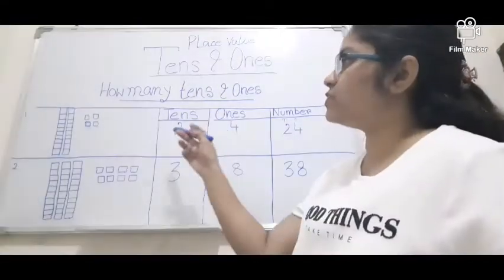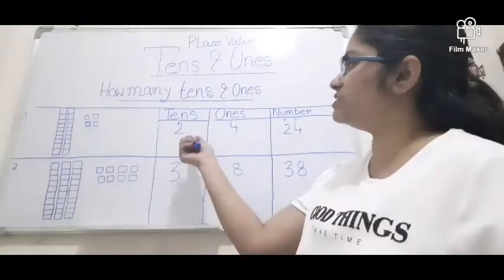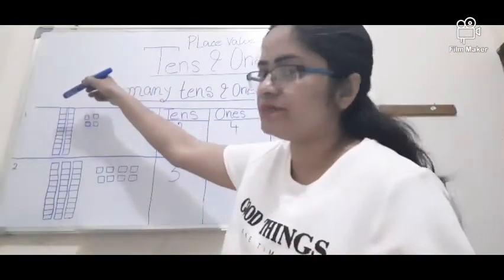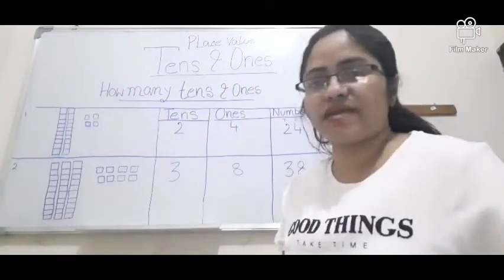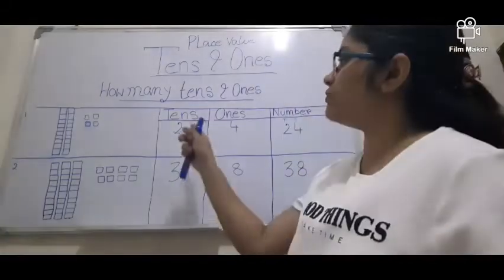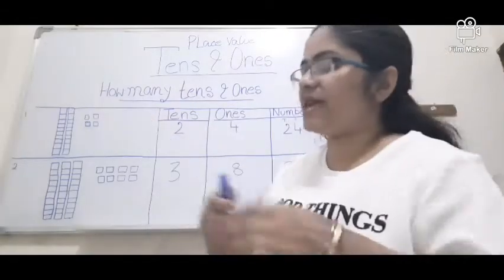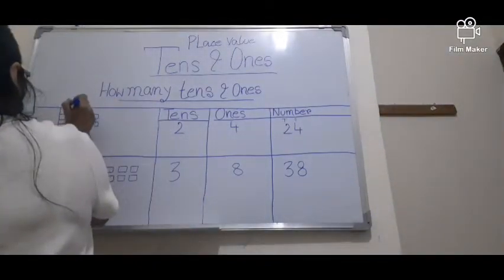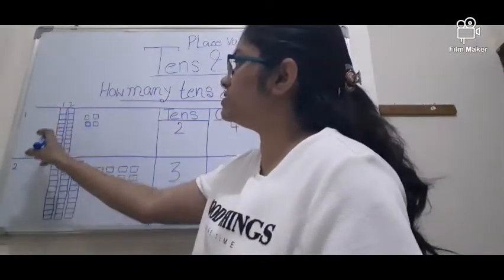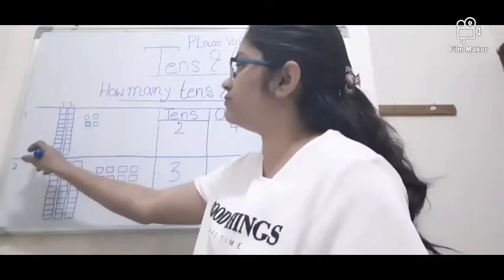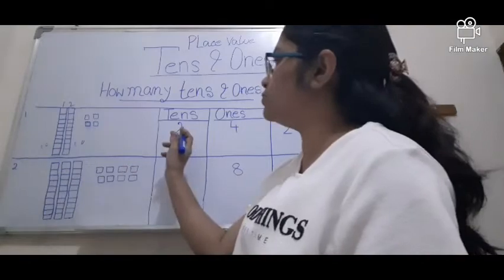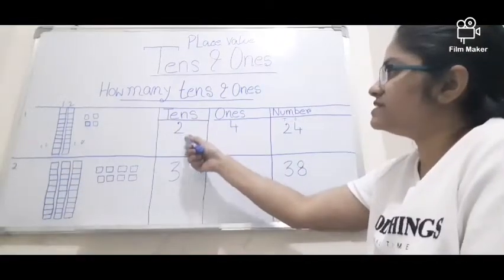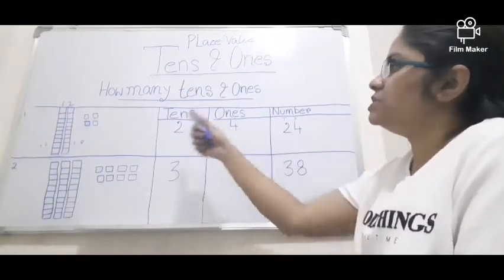So how can we represent the number 24? For the 2 in the 10s place, I can draw 2 groups — each group has 10 blocks. So group 1 has 10 blocks and group 2 has 10 blocks — that means 10 + 10 = 20. Together with 4 in the 1s place, this is 24.